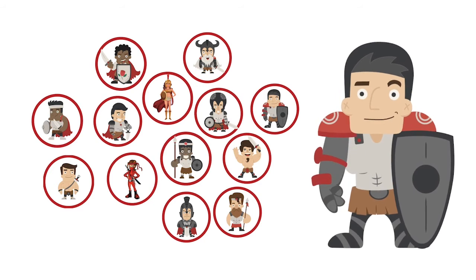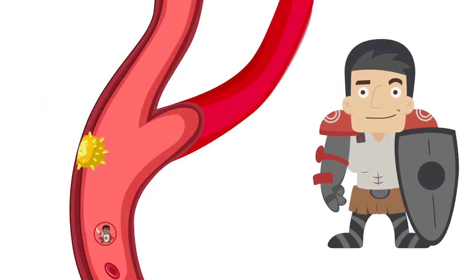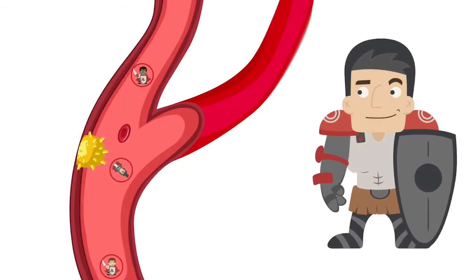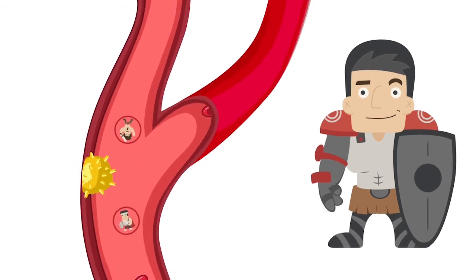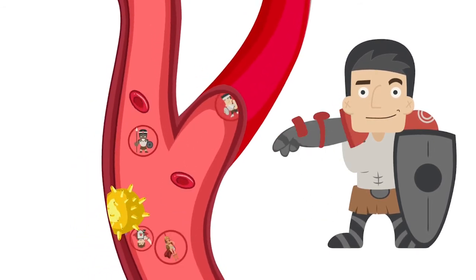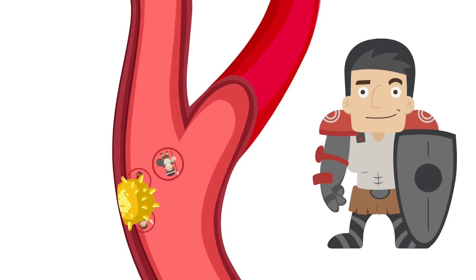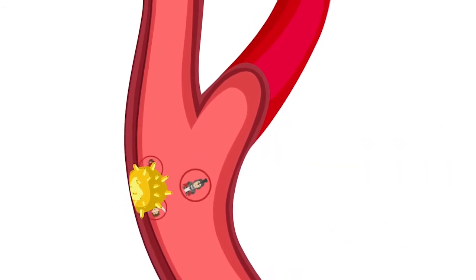to find and destroy any invaders that make it past the outside lines of defense. Some of these cells are also able to find and kill cancer cells. All of the things that work together to fight infection and cancer